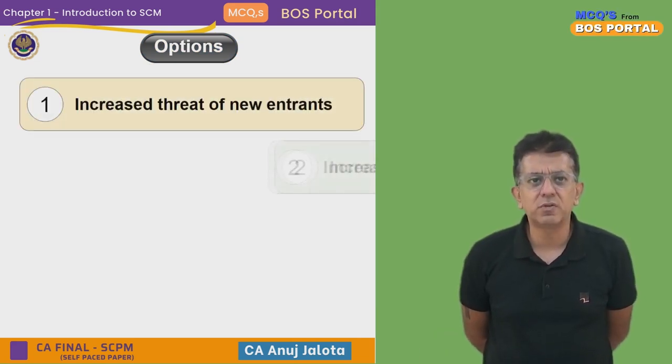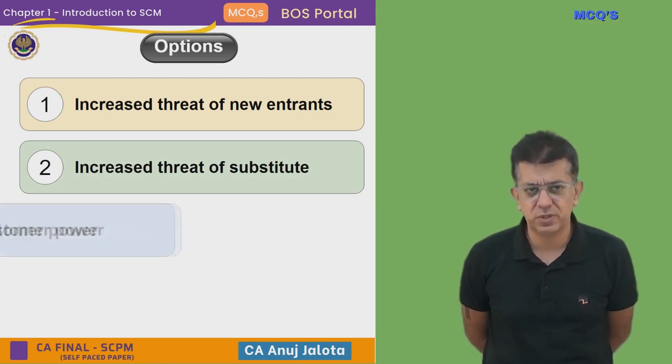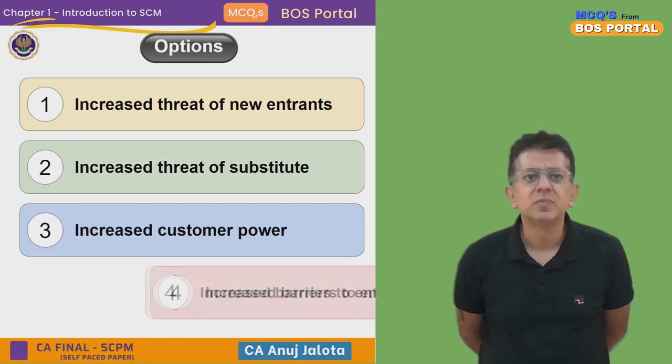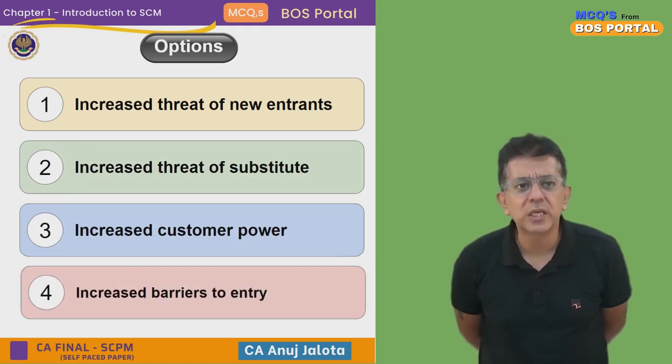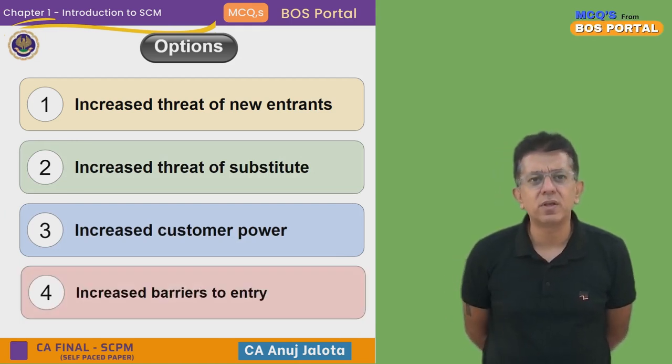The four options are: first, increased threat of new entrants; second, increased threat of substitutes; third, increased customer power; and fourth, increased barriers to entry.